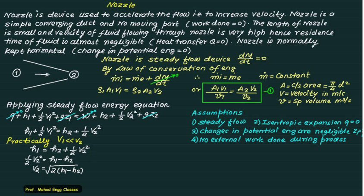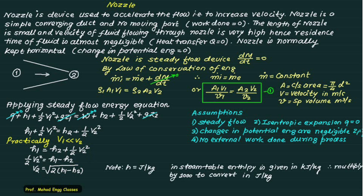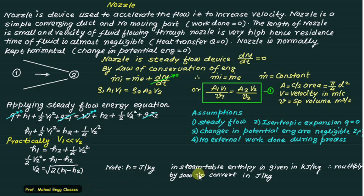In this equation, h1 minus h2 is the enthalpy drop. Remember that in the steam tables enthalpy is given in kilojoules per kg, so you must multiply by 1000 to get the velocity in the correct range of 600 to 800 meters per second, otherwise you will get a wrong answer.